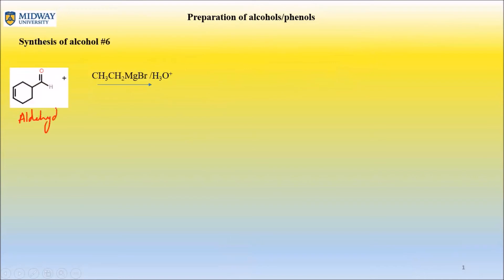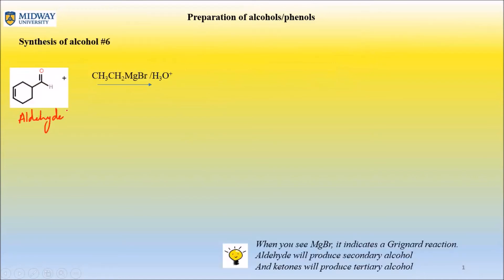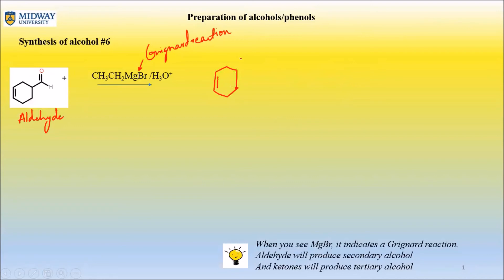That's number six — the exact same reagents, but the reactant itself is slightly different. Here we have an aldehyde. Again, when you see MgBr, you know you're dealing with a Grignard reaction. If it's an aldehyde, you are going to end up with a secondary alcohol. This does not act on the double bond itself but only acts on the carbon containing the C=O.